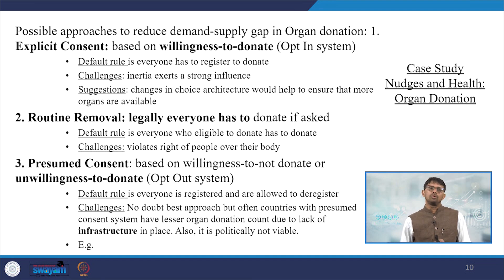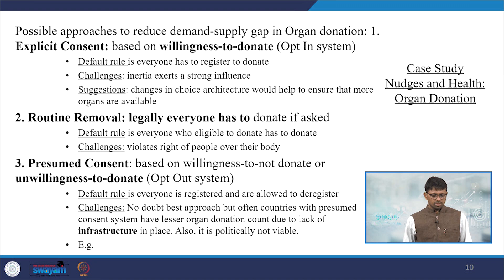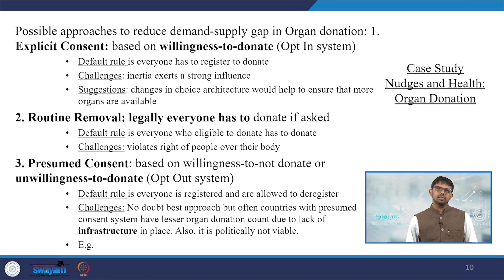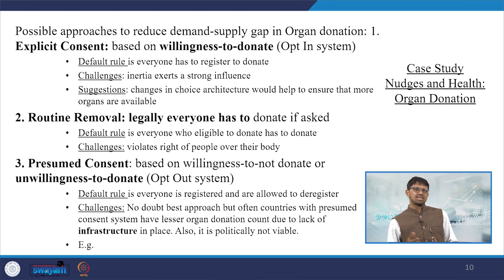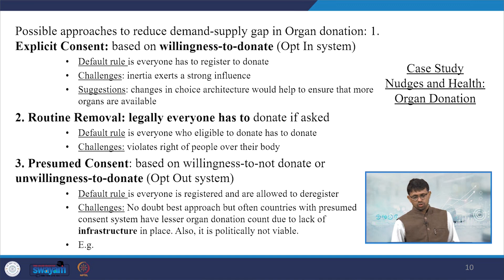Here is a case study on NOSes and health — organ donation opt-in or opt-out systems. Coming to the first one, explicit consent, it is simply based on willingness to donate. For example, a form filled at the time of obtaining a driving license. The default rule is that everyone has to register to donate. A challenge is that inertia exerts a strong influence, and suggestions like changes in choice architecture would help ensure more organs are available.